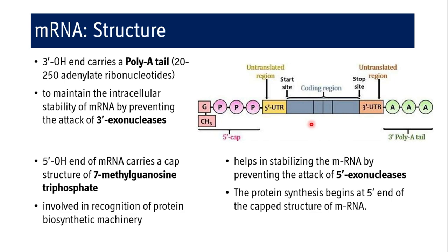From the attacks of both 5' exonucleases and 3' exonucleases, the 7-methylguanosine triphosphate cap and the 3' poly-A tail protect the mRNA — otherwise it would be degraded. After identification of the mRNA by the ribosome system, the assembly begins protein synthesis at the 5' end of the capped structure of mRNA in this particular coding region.